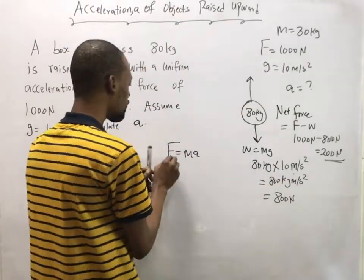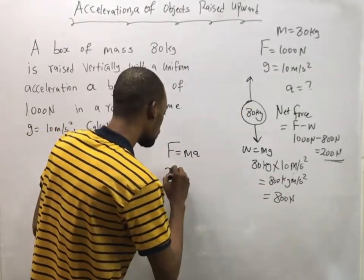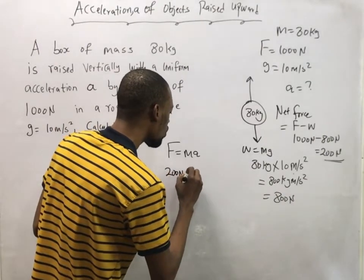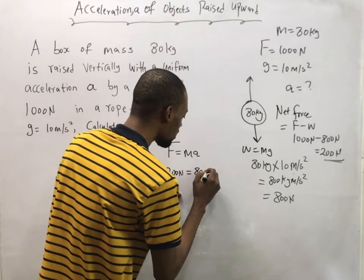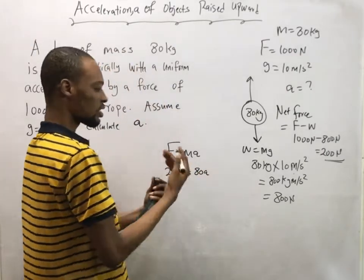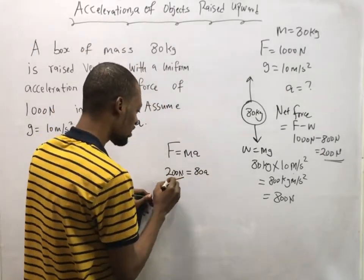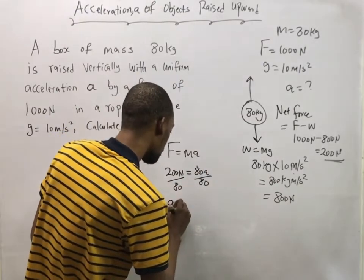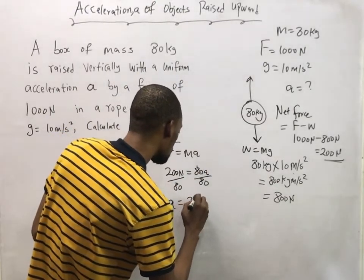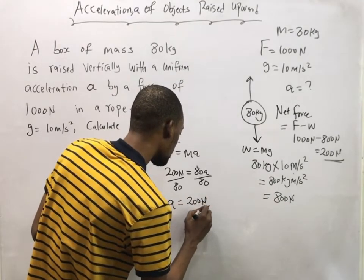This implies that force here becomes 200 Newton equals mass is 80 kg, 80 times a. Dividing both sides by 80, here by 80 and here by 80, acceleration is simply 200 Newton over 80.